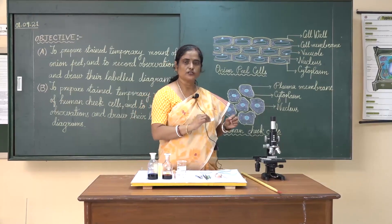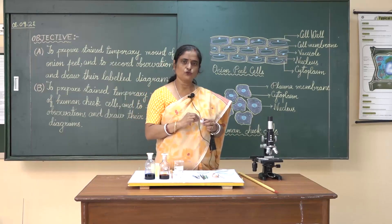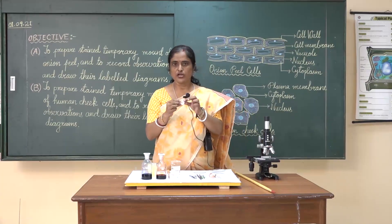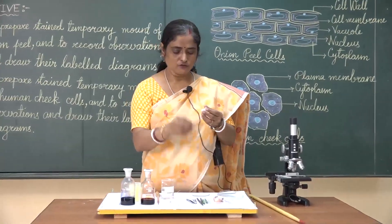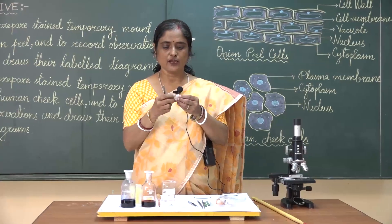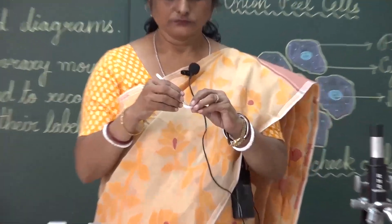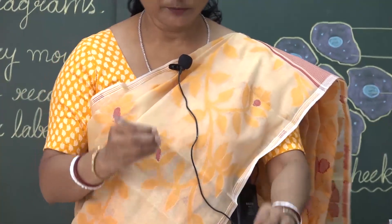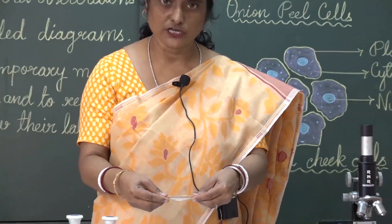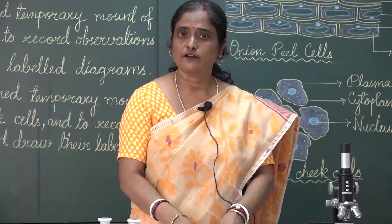The specimen we put under the microscope should be quite thin. So we take a peel of the onion. This is the onion scale leaf and we can take out the peel from inside just by breaking it. You can break it this way or that way and then take a peel. Take the peel and put it in the watch glass which has water, so that it does not get dry.